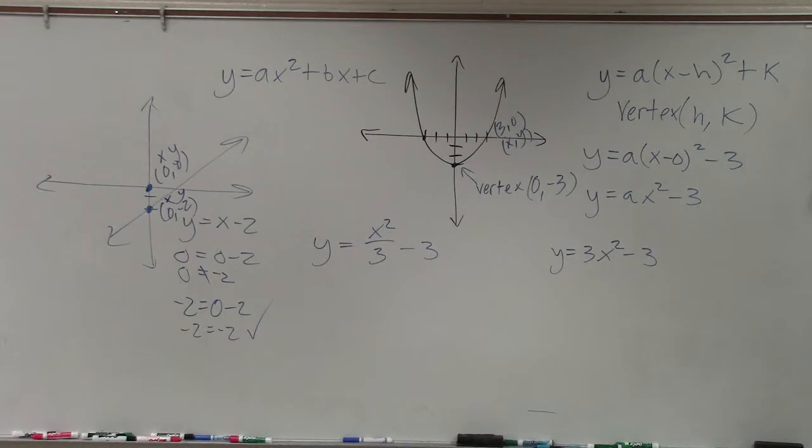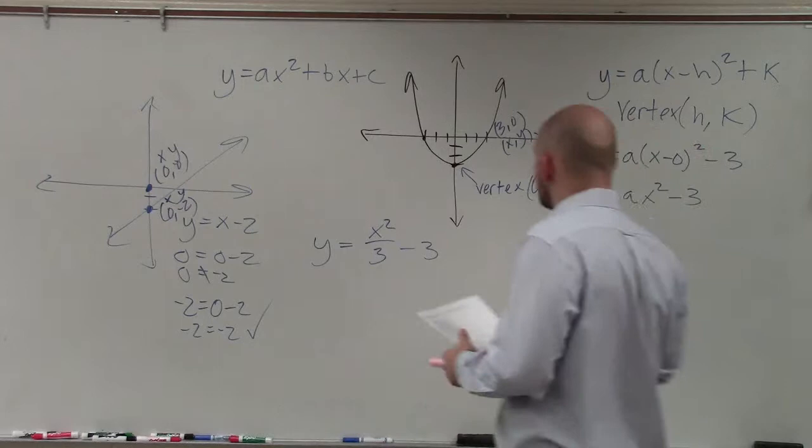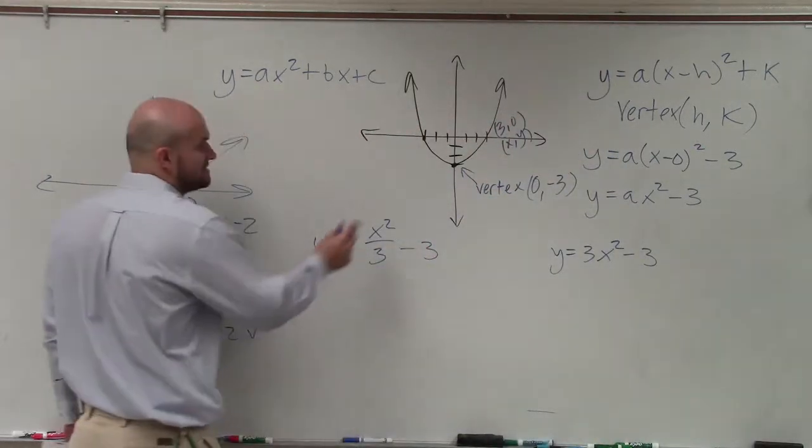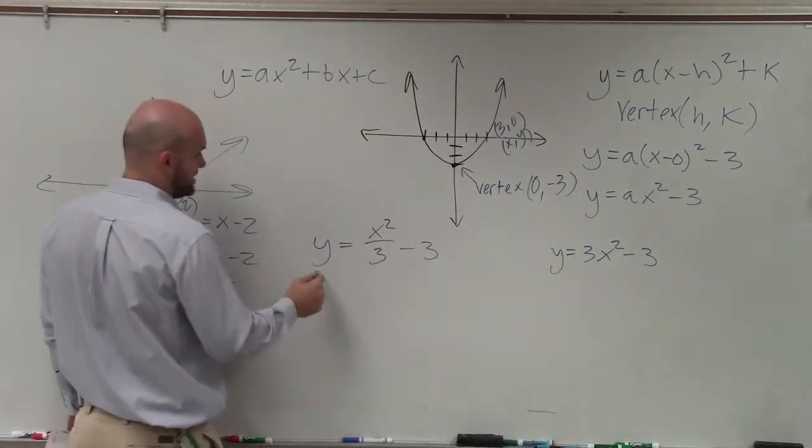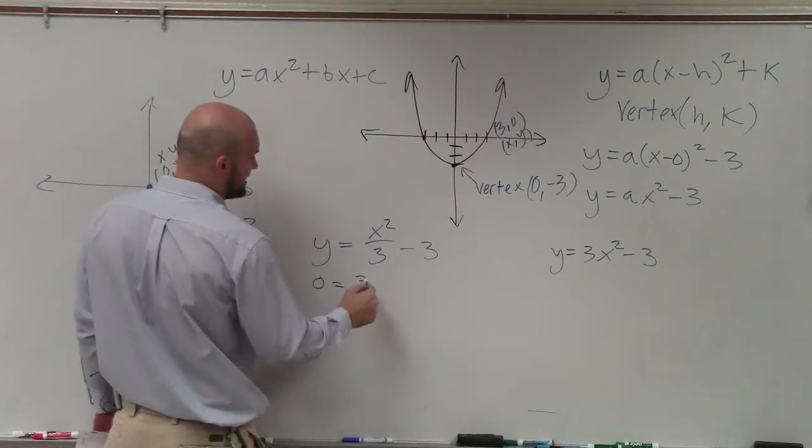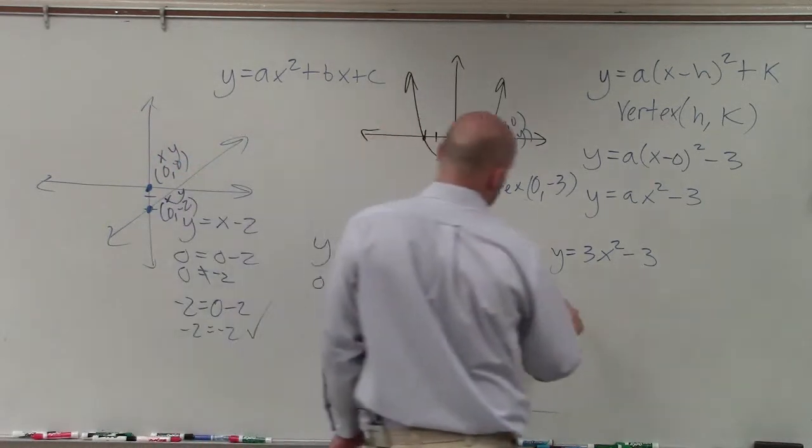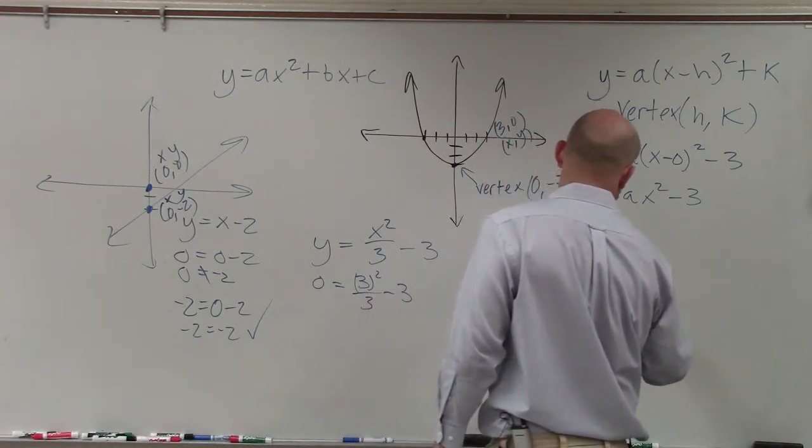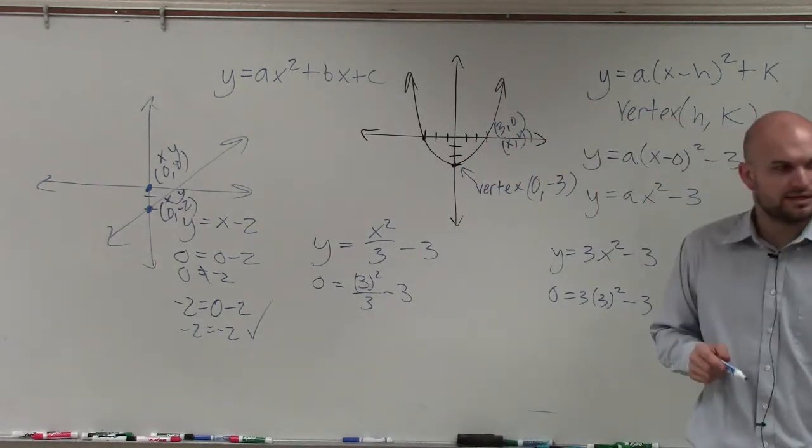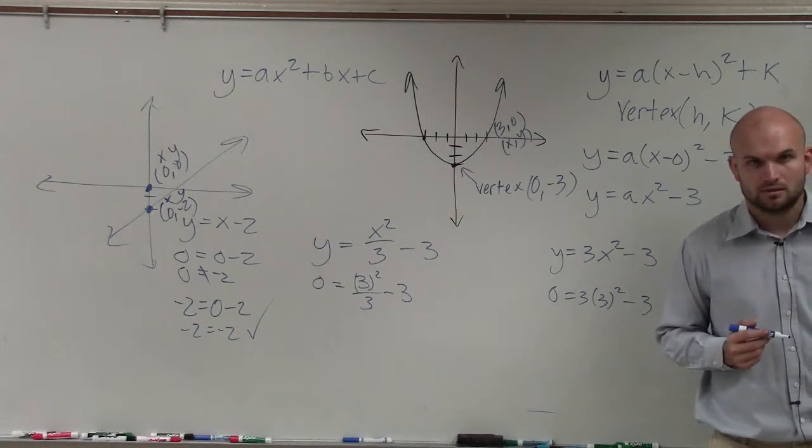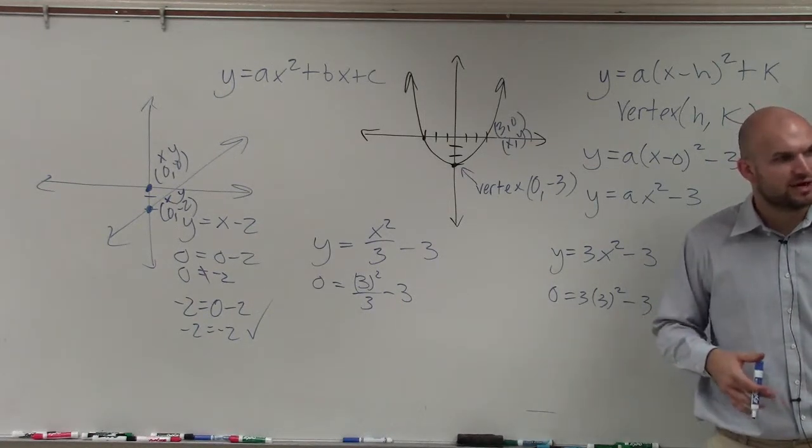So what I'm going to do is I'm going to plug in the point 3 comma 0 in for both of these. So to do that, all I simply do is plug in 0 in for y and 3 in for x. Does everybody see what I did? I just plugged in 0 and 3 for x and y.